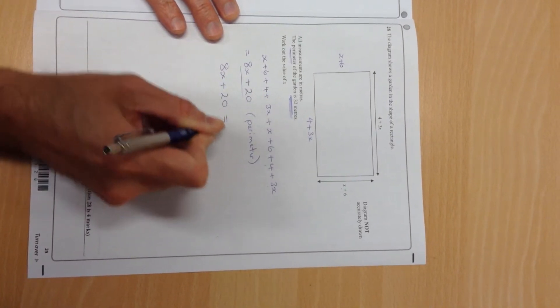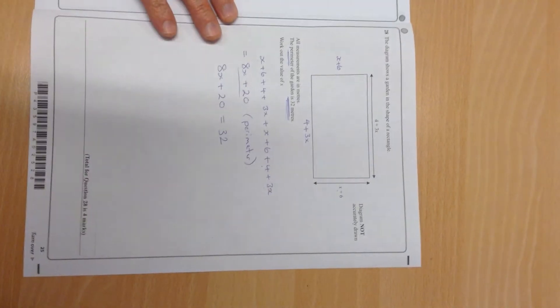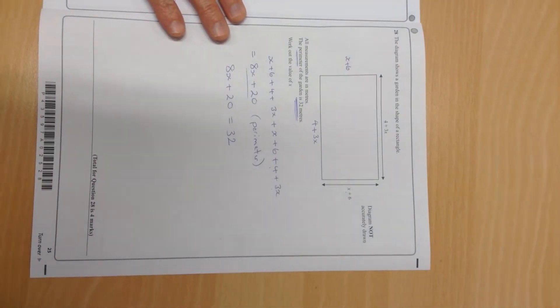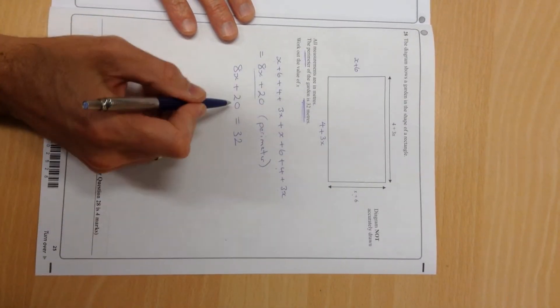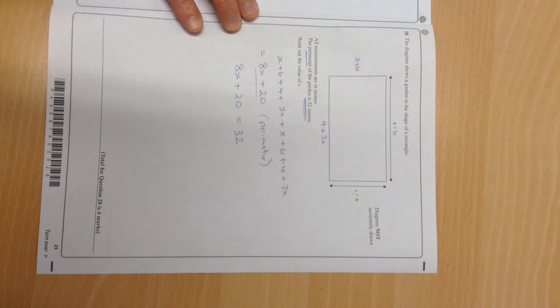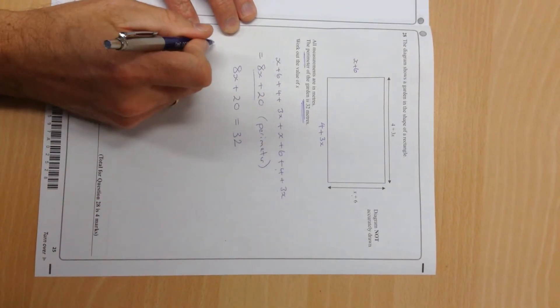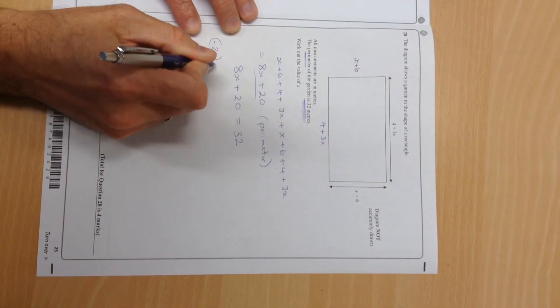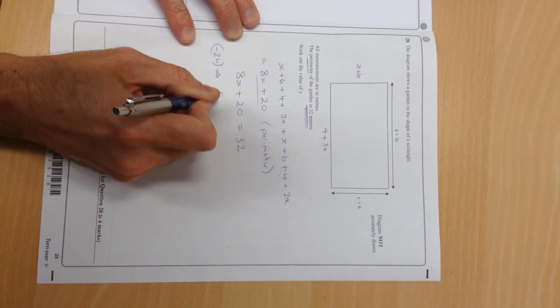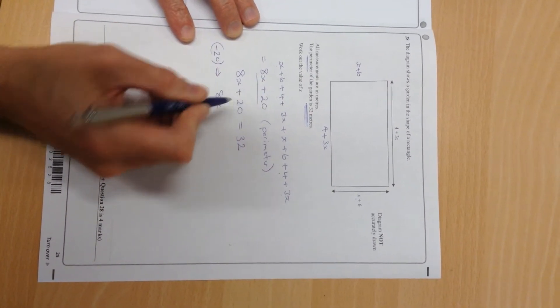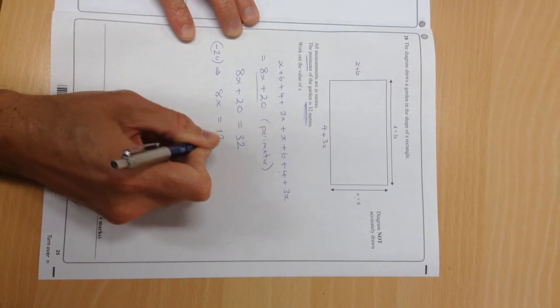8x plus 20 equals 32, so I should be able to work out what x is, and that's what they want me to do. 8x plus 20, the 20 is going to go. I'm going to get rid of that 20 by taking it away from both sides. So what's going to be left behind? Well, just 8x equals 12.